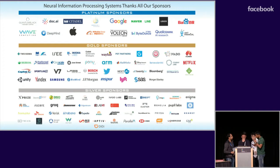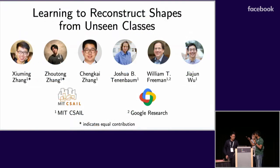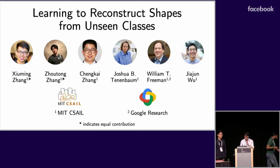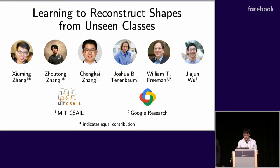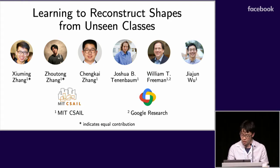Our second oral talk of the day is going to be about learning to reconstruct shapes from unseen classes, jointly presented by Jotong Zhang and Xiuming Zhang. Good afternoon everyone. We would like to introduce our work on learning to reconstruct shapes from unseen classes. This is a joint work with Xiuming, Chun Kai, Josh, Bill, and Jiajun.